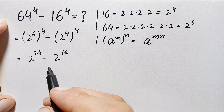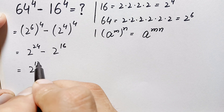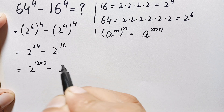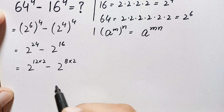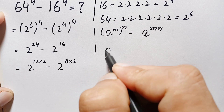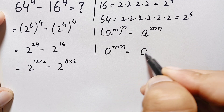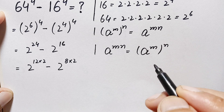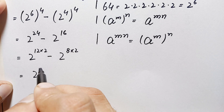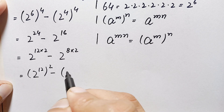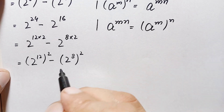Next, we rewrite these two powers. 2^24 can be written as 2^(12×2), and 2^16 can be written as 2^(8×2). We apply another exponential identity: a^(m×n) = (a^m)^n. So this becomes (2^12)^2 minus (2^8)^2.